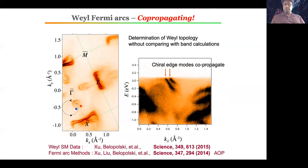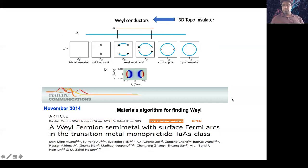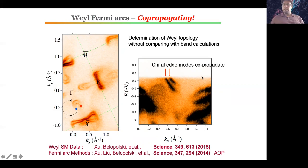We used an experiment-only method to prove Weyl semimetals, as we did with most topological materials — without referring to theory, just looking at the experiment. Our idea was: probe the surface and see arc-like features, then take a loop cut in momentum space. Looking along the energy axis, these arc-like features look very strange — they have no counterpart. They are edge modes that co-propagate, something no one had seen before.